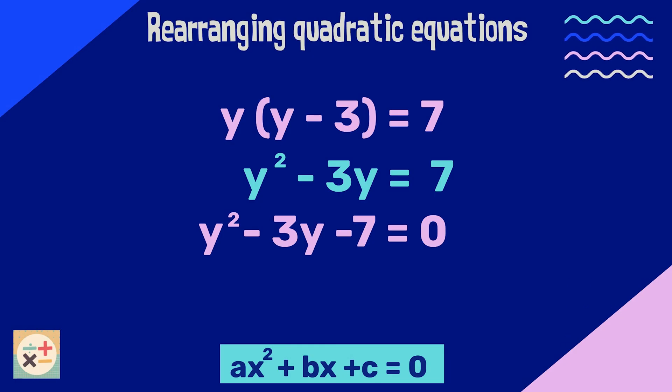Leaving us with a minus 7 on the left side. We can now identify each of the terms corresponding to the quadratic standard form.